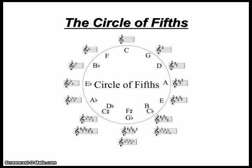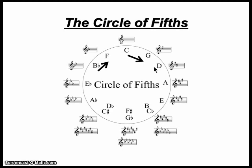This is the circle of fifths. The circle of fifths shows the relationship between each key in a tonic and dominant relationship. One step clockwise on the circle of fifths brings you to the dominant key. For example, if you're in the key of Bb, you can modulate to the key of F. If you're in the key of C, you can modulate to the key of G. If you're in the key of D, you can modulate to the key of A, and so on.